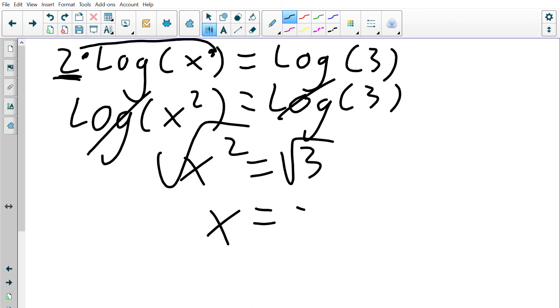Now I have x squared is equal to 3, and then I would square root both sides, and I have x is equal to plus or minus the square root of 3. If you have any questions, feel free to email me.